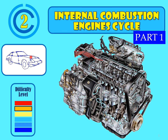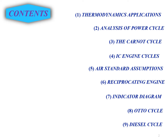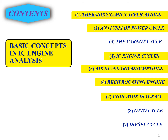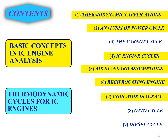Assalamu'alaikum and hi. This is Chapter 2: Internal Combustion Engine Cycle, Part 1. In this chapter we have nine subtopics: thermodynamic application, analysis of power cycle, the Carnot cycle, IC engine cycle, air standard assumption, reciprocating engine, indicator diagram, Otto cycle, and diesel cycle. The basic concepts in IC engine analysis are highlighted in yellow, and the thermodynamic cycles — the Carnot cycle, Otto cycle, and diesel cycle — are highlighted in blue.